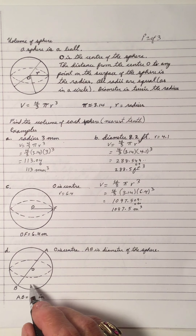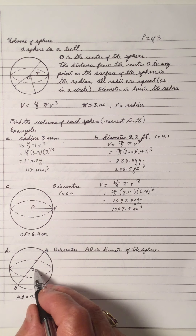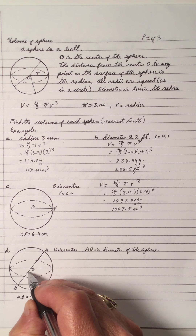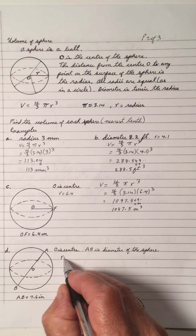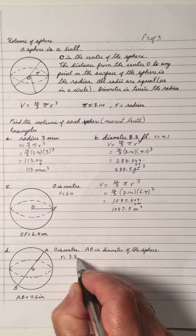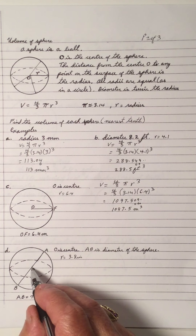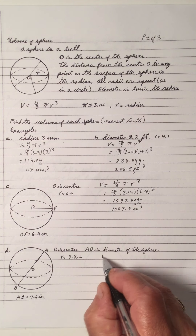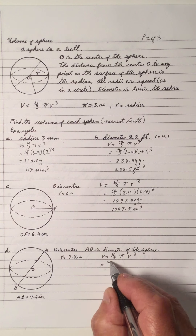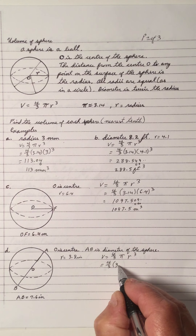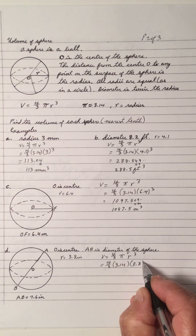For D, we have a sphere again — the same diagram — but we're saying that O is the center, so that means OA is a radius and AB is a diameter. So if AB is 7.6, that means the radius is half of that, which is 3.8 inches. It says AB is the diameter of the sphere, so OA is the radius, and the volume is 4 over 3 pi R cubed — 4 over 3 times 3.14, and the radius is 3.8 cubed.